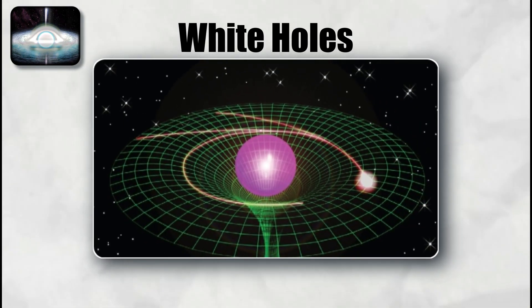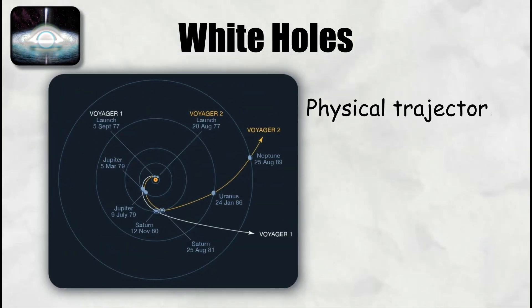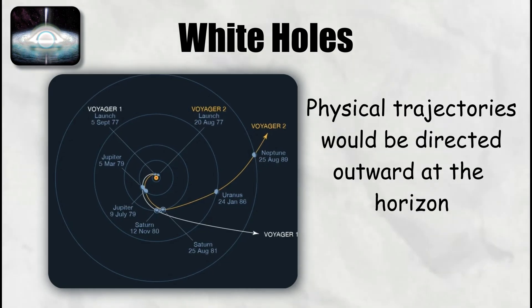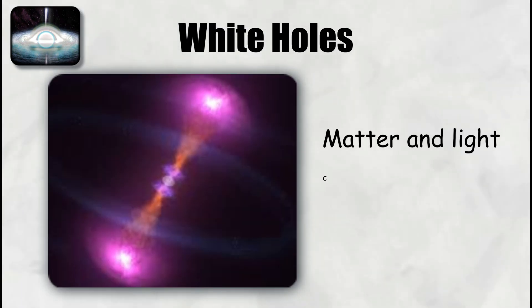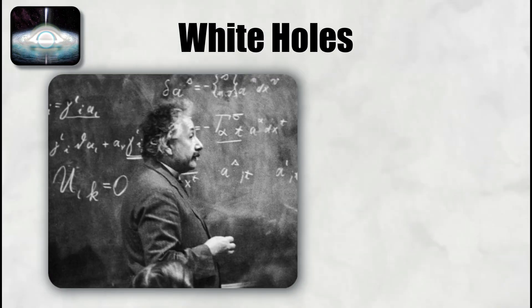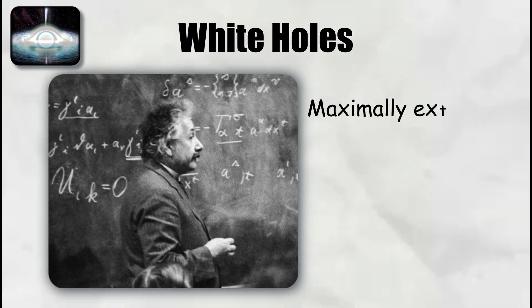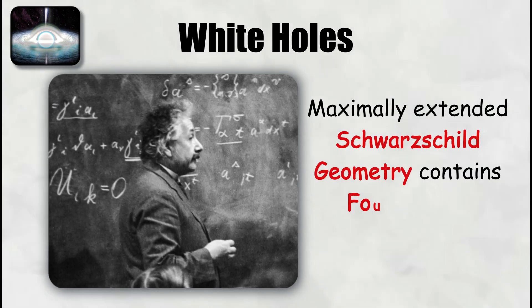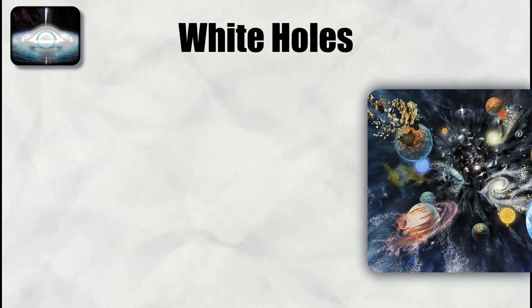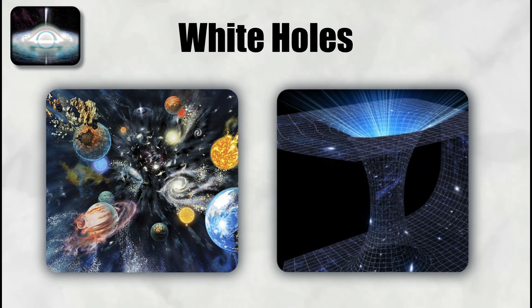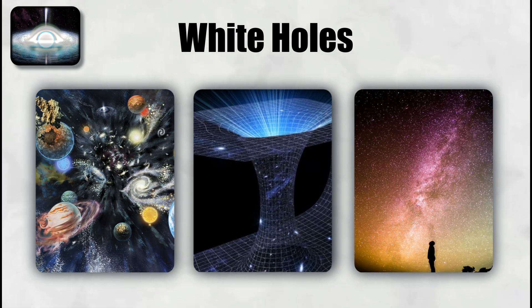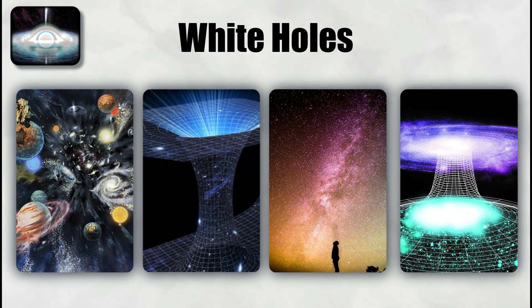The outside space-time would still be curved, but all physical trajectories would be directed outward at the horizon, so matter and light could only emerge. In Einstein's equations, the maximally extended Schwarzschild geometry contains four regions: an exterior universe like ours, a black hole interior, a separate exterior universe, and a white hole interior.